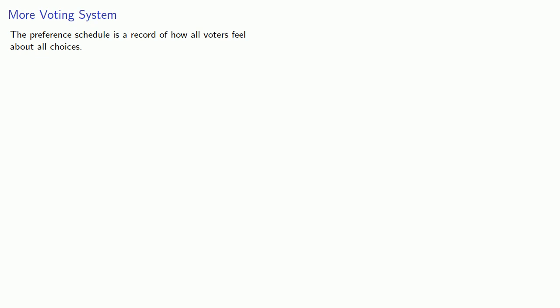Remember the preference schedule is a record of how all voters feel about all choices. We can define a social choice function that takes the preference schedule and ranks all the choices.